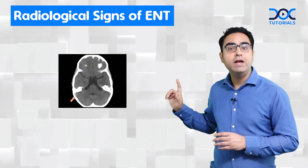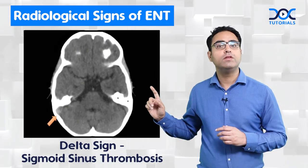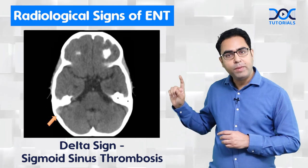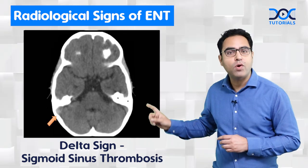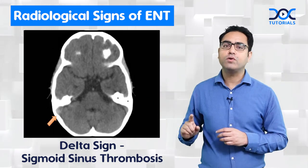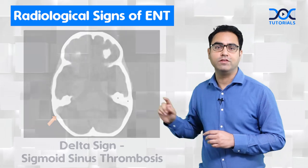The next sign is called the delta sign. The delta sign is seen on the CT scan of the brain in a patient of sigmoid sinus thrombosis, also called lateral sinus thrombosis.